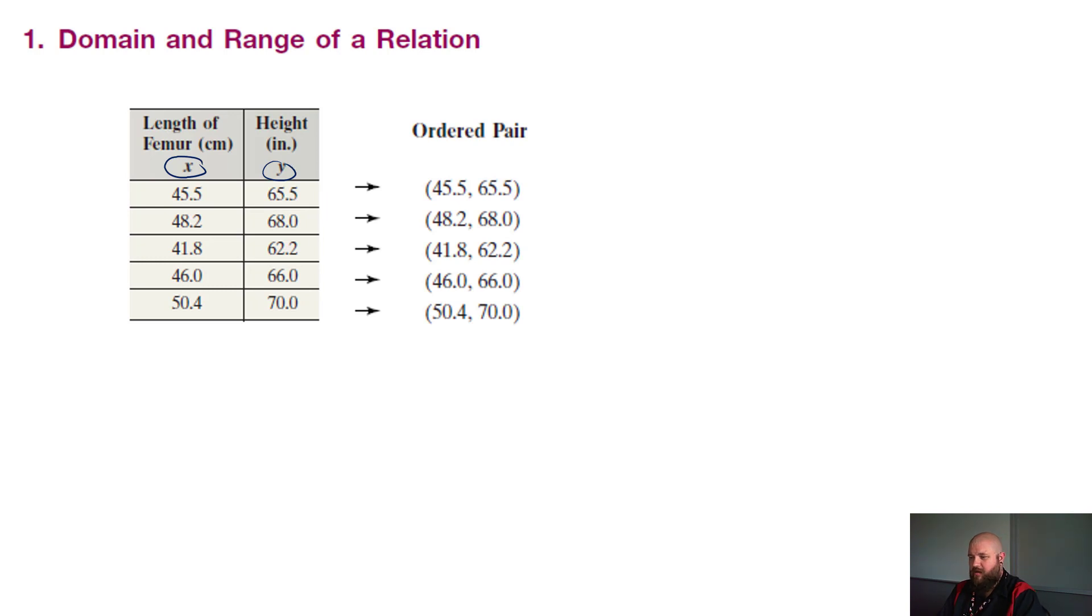So for an ordered pair, you have your x values and you have your y values. So you have 45.5, 65.5, and so forth, going down to 50.4, which is our last x value, and 70.0 for our y values. So that is creating the ordered pair for given data.